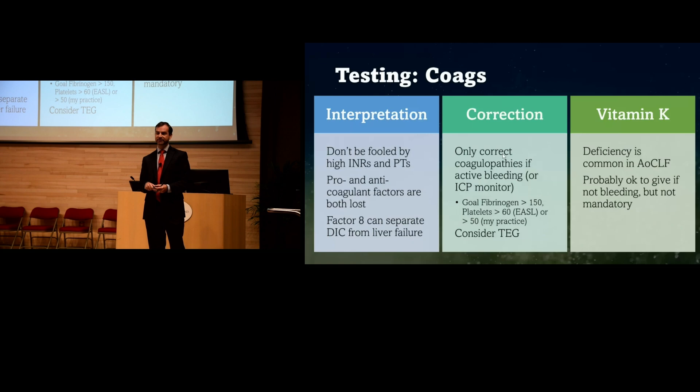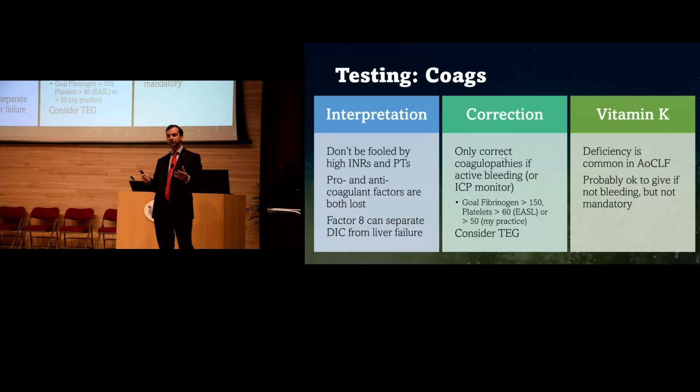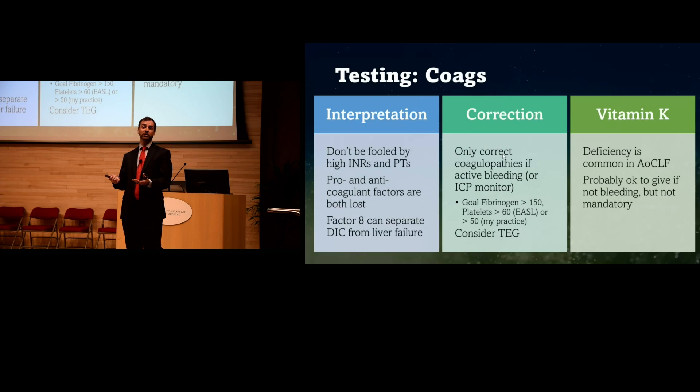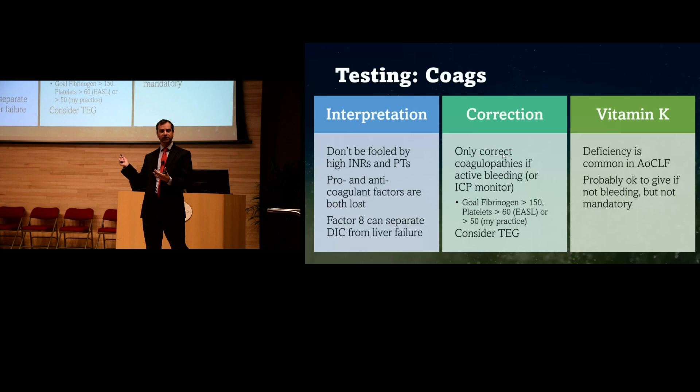You can send a TEG if you want to further assess the coagulation status. Another challenge is that coagulation abnormalities often look like DIC, and many of these patients are septic with true DIC. A useful differentiating test is factor VIII — since it's primarily made in the endothelium, a normal factor VIII suggests the liver is the problem. A low factor VIII may indicate DIC.